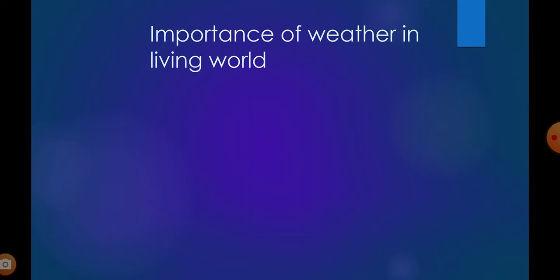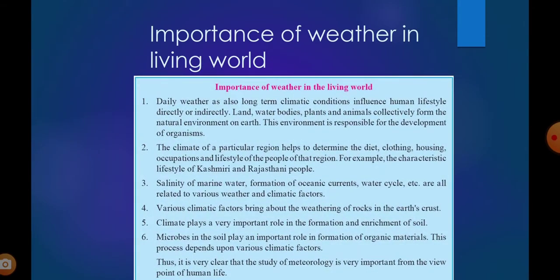Next is the importance of weather in the living world. Daily weather as well as long-term climatic conditions influence human life directly or indirectly. Land, water bodies, plants, and animals collectively form the natural environment on earth. This environment is responsible for the development of organisms. The climate of a particular region helps to determine the diet, clothing, housing, and occupations of the people of that region.